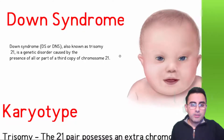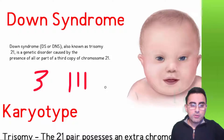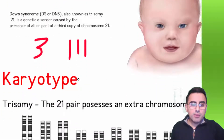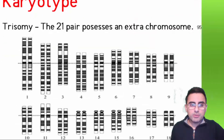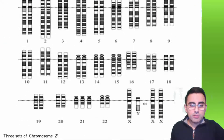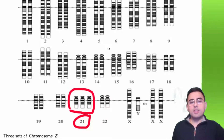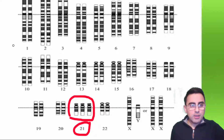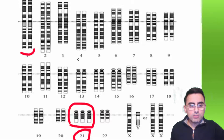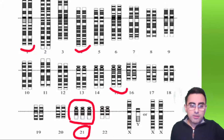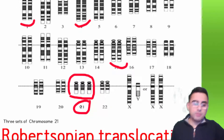Down syndrome, also known as Trisomy 21, has a very simple explanation: there are 3 copies of chromosome 21 instead of 2. Looking at the karyotype — the chromosomal picture — you can see all chromosomes are paired and presented as two chromosomes, but chromosome 21 has 3 copies instead of 2.